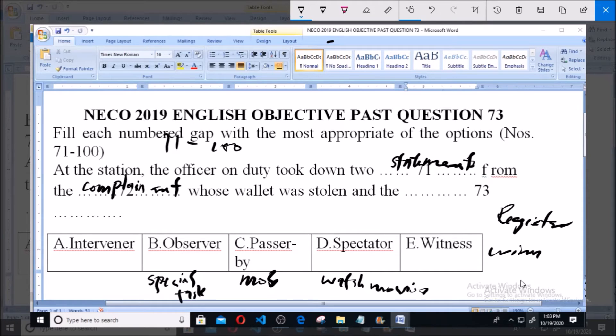The intervener means somebody, a person who intervenes. Option E is witness, and when we talk of case, as related to this, they always call on witness. Witness simply means